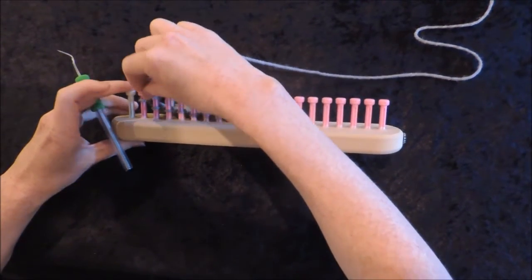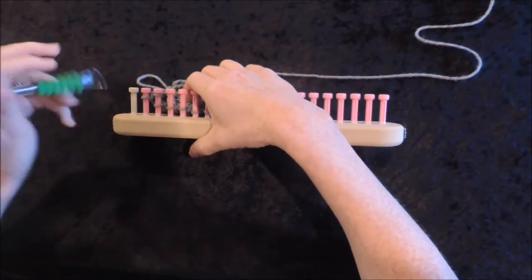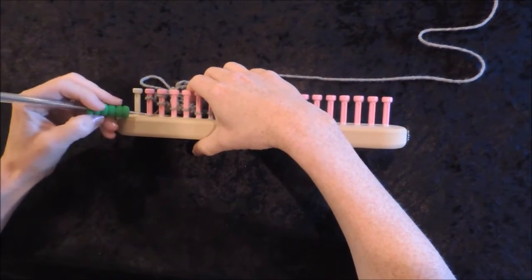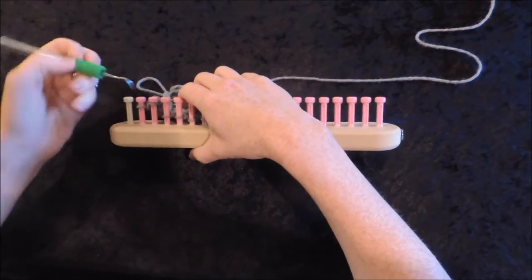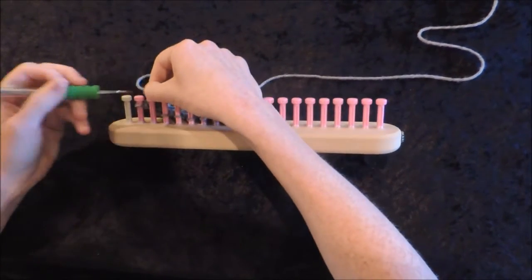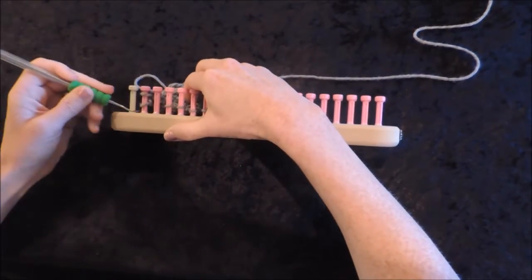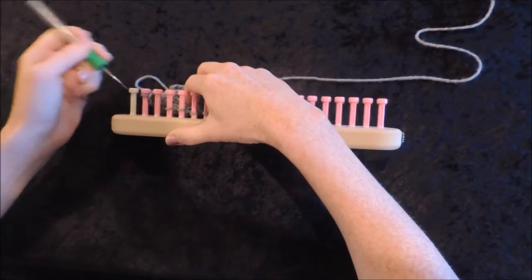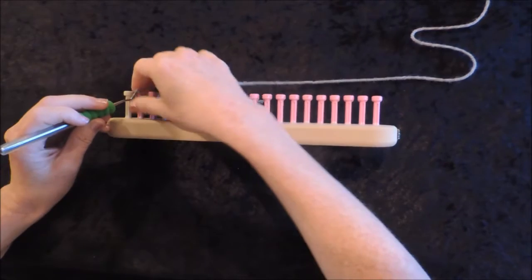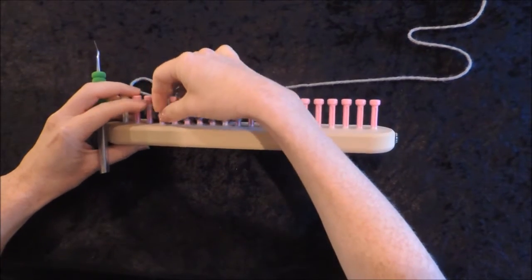So now we're going to do it with peg 3. We're wrapping, picking it over, taking peg 3 off, putting it on peg 2, picking over, taking off peg 2, and moving it to peg 3.